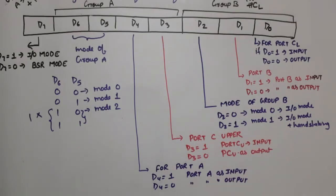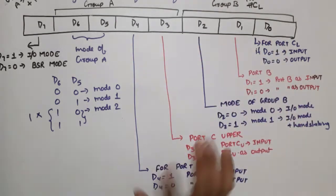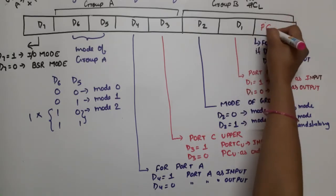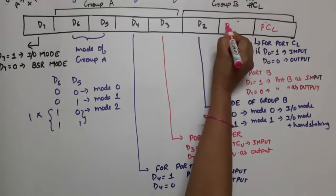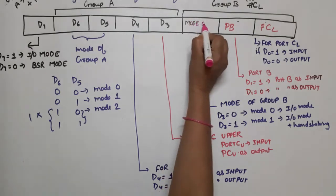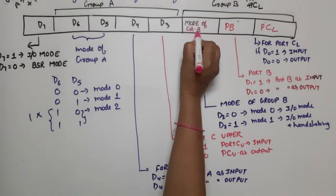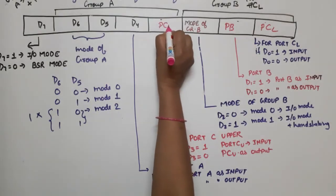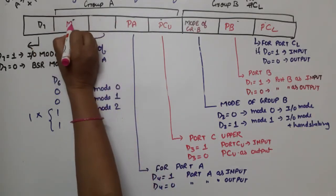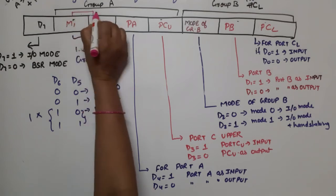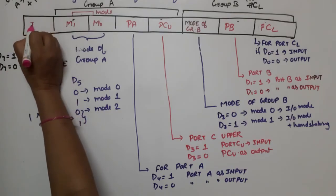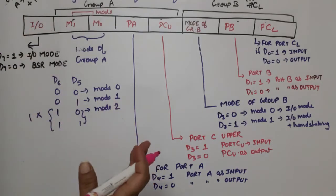Let me summarize the control word format. D0 is for Port C lower, D1 is for Port B, D2 is the mode of Group B, D3 is for Port C upper, D4 is for Port A, D6 and D5 are the mode bits (M1, M0) for Group A, and D7 is the I/O mode or BSR mode selector — 1 means input/output mode, 0 means BSR mode.